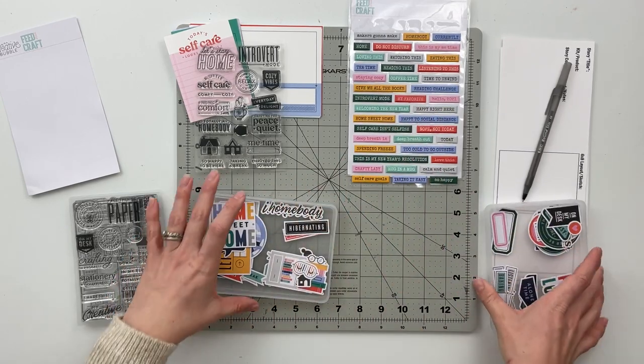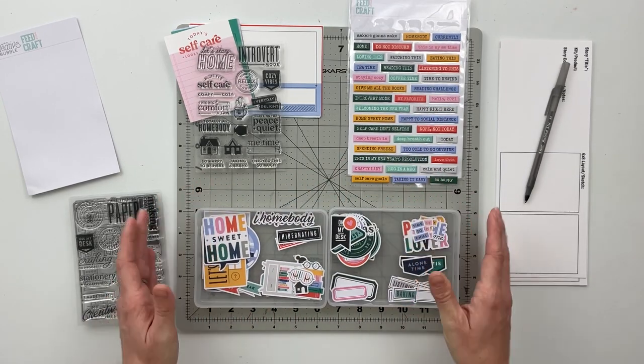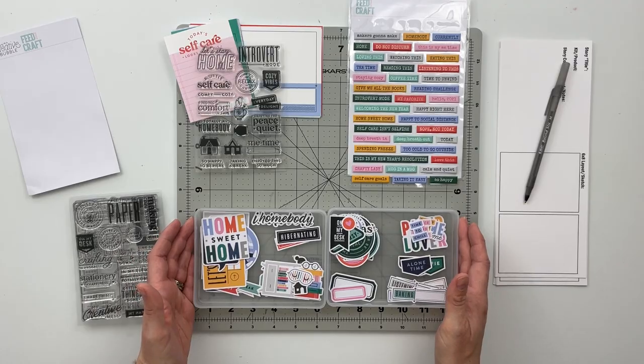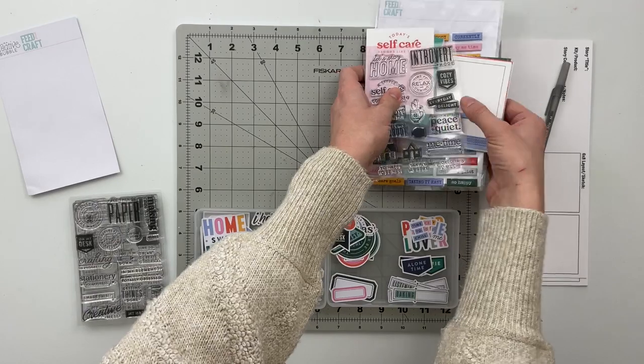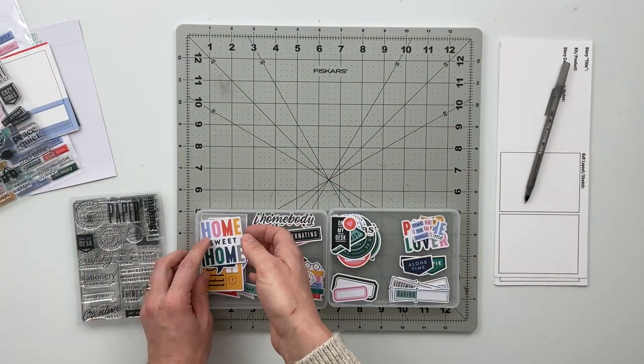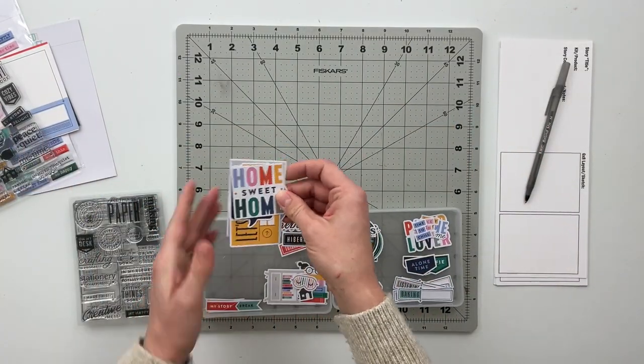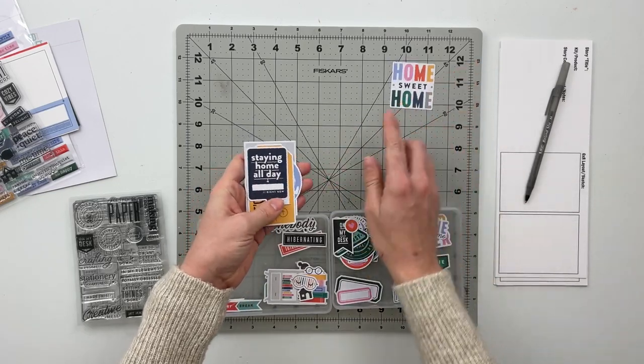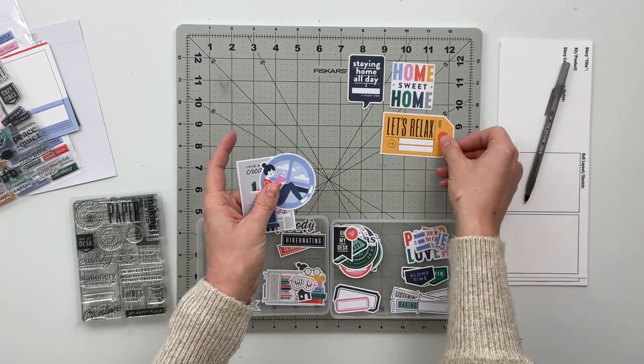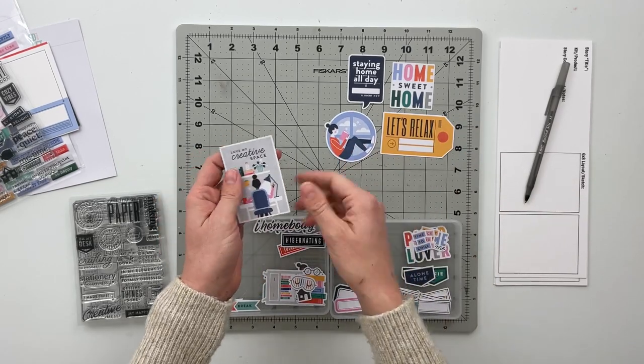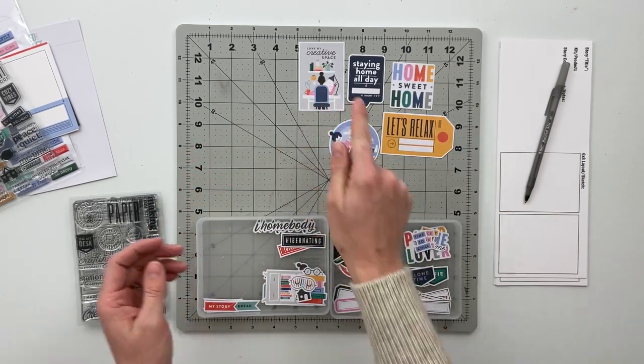And then there is an ephemera pack that comes with so many pieces. So let me just clear these off of this middle portion and I can lay them all out here for you to see. There are some bigger ephemera pieces. We've got home sweet home, staying home all day, a tag that says let's relax, a girl reading by a window, and love my creative space.